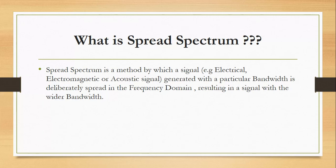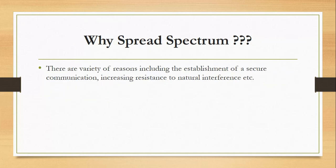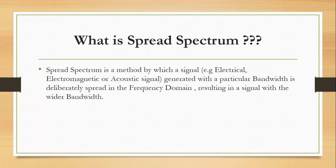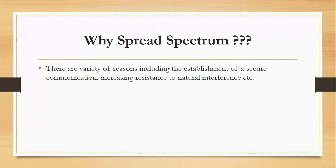Now, why spread spectrum? Why can we not transfer the original signal? It has got a reason. The reasons include the establishment of secure communication, so we are securing the communication after spreading the signal. The foreign particles cannot enter the signal or there cannot be noise inside.